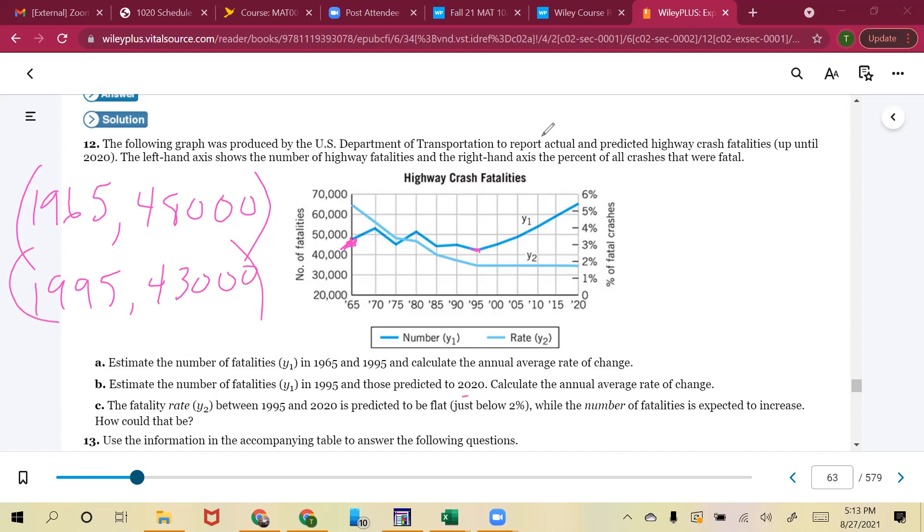And then while I'm at it, because I'm going to have to find 2020 anyways, let's go ahead and find 2020. It's going to be up here. So 2020, I'm thinking it's going to be 65,000. Yeah, we'll just do 65,000. So 2020 is 65,000. Okay. So that's going to give us enough information to find parts A, B, and C.